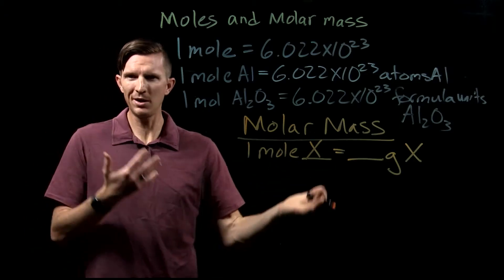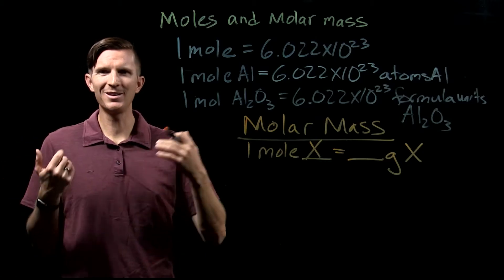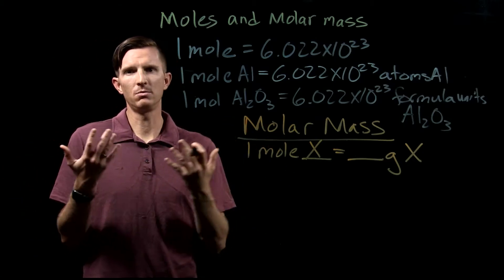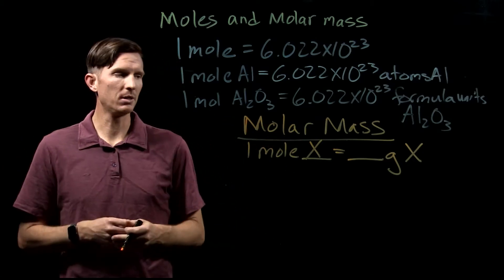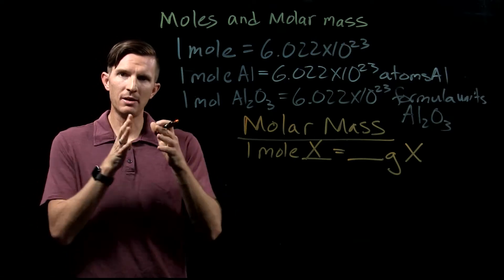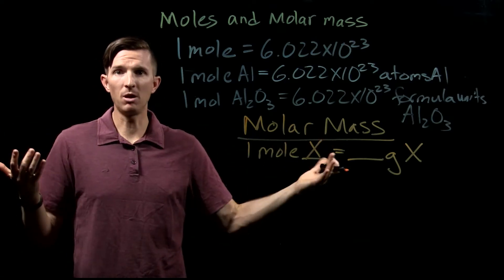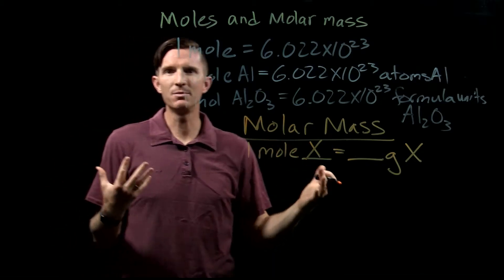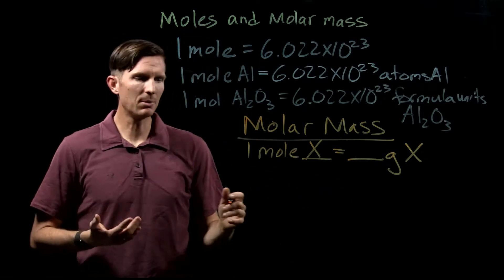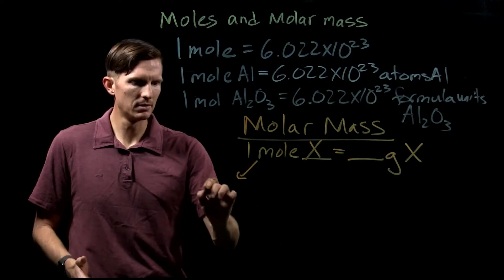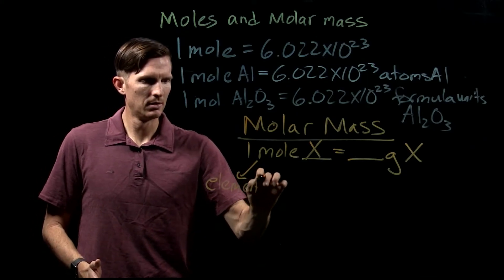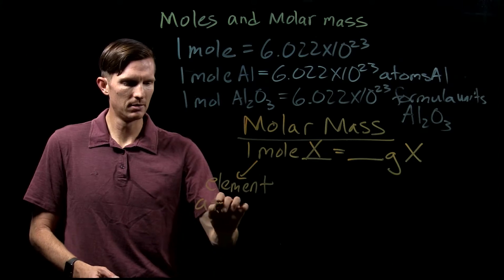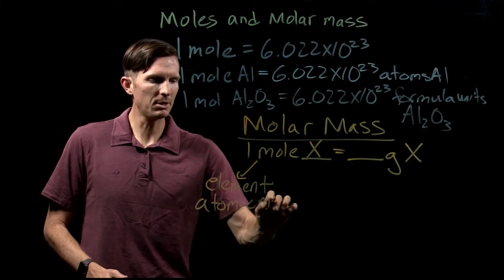When we're talking about ionic compounds, or ions, or elements, or covalent compounds, we can break it down into smaller pieces or smaller ways of talking about it. Broadly, we could say molar mass for any kind of substance. If I want to talk about an element, I'm going to talk about the atomic mass.